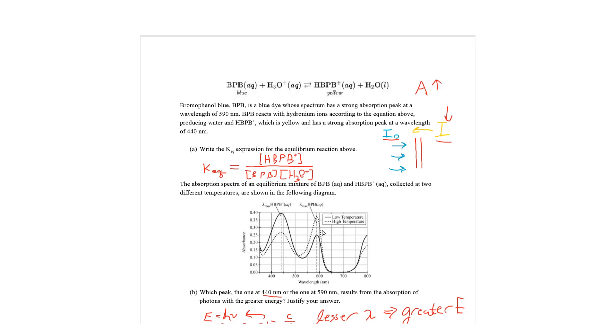So, we're going to pick the BPB peak right here. So, what happens when you increase the temperature? When you increase the temperature, you also increase the concentration of the products. Absorbance is directly proportional to the concentration. That's on the formula sheet.